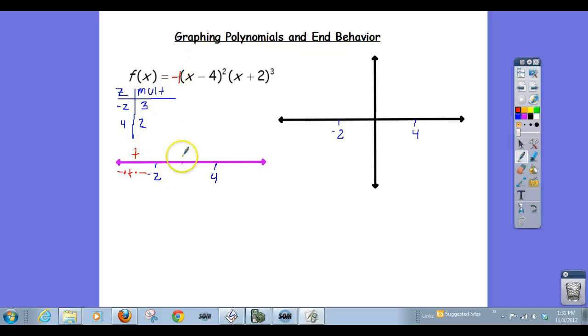Again, this next interval, I'm going to put that negative down there because of that negative 1. It's going to affect my outputs. And 0 is on this interval, so I'll plug in 0. 0 minus 4 is negative 4 squared is a positive. 0 plus 2 is 2 cubed is a positive. So I've got a negative times a positive times a positive is a negative.